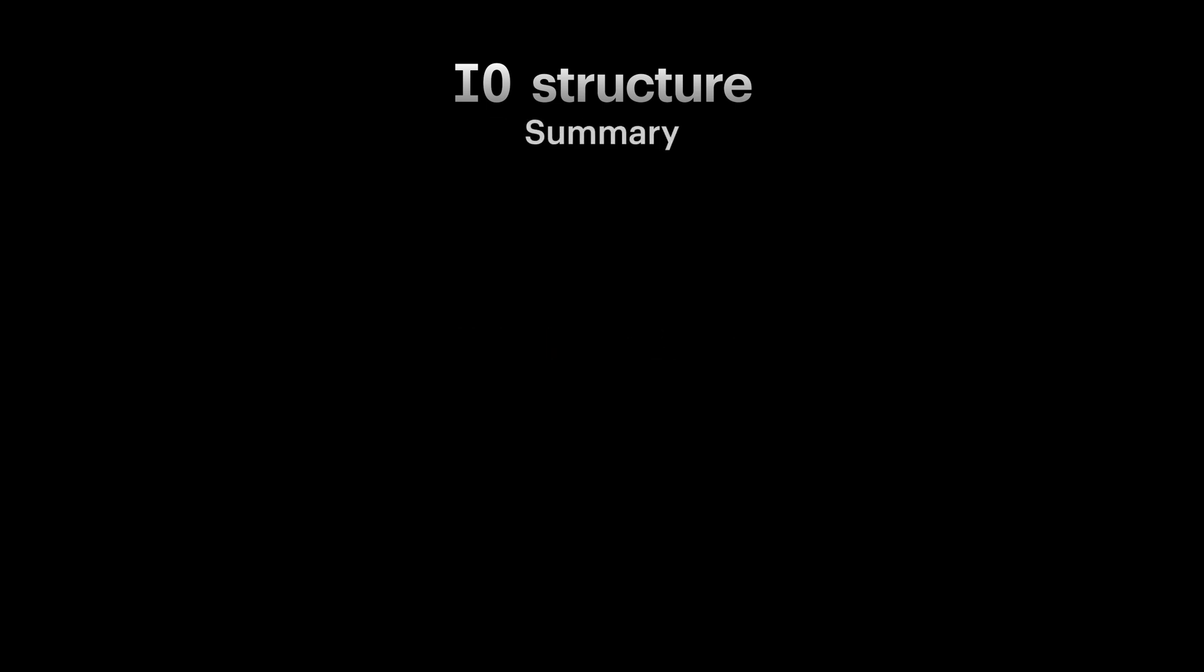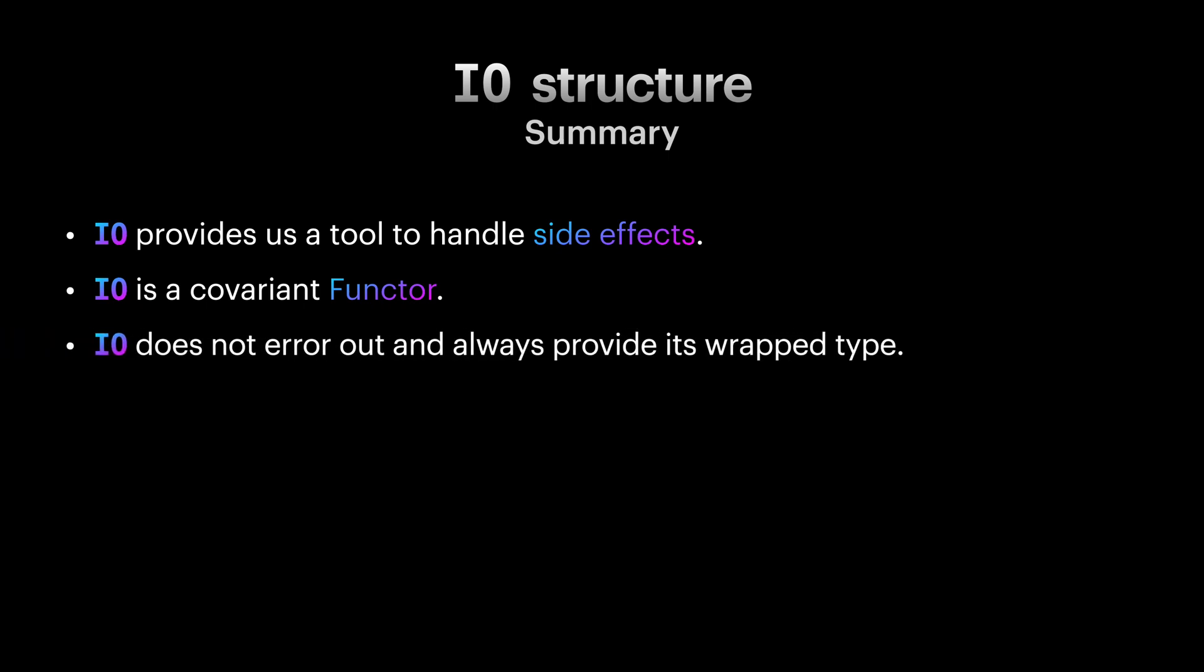Let's summarize. IO provides us with means to handle side effects in our applications. It does that by encapsulating side effects in the thunk functions, effectively delaying them. Do not think of IO as a function, but as a structure that holds data. And with tools like functor, we can build and compose our application without running any side effects until we're ready to do so. IO doesn't error out and always delivers us the type it holds. We can use either structure if we need to model errors in IO.